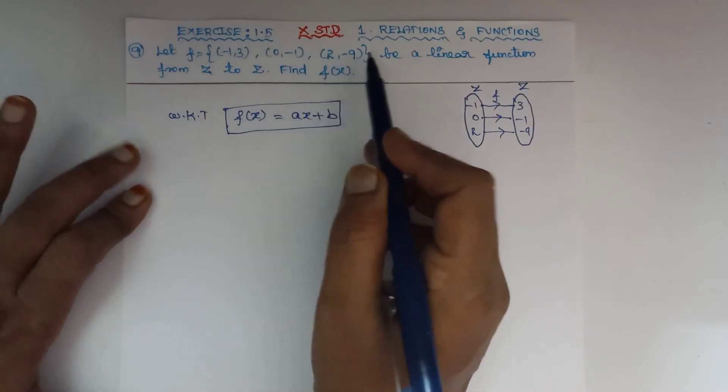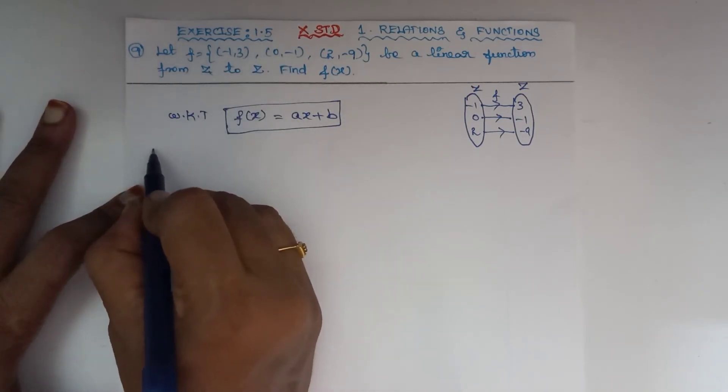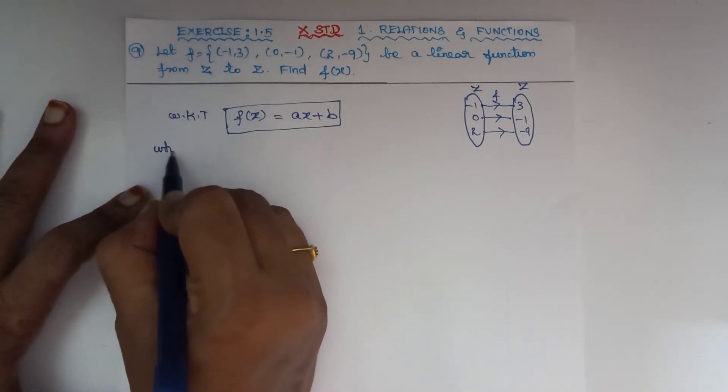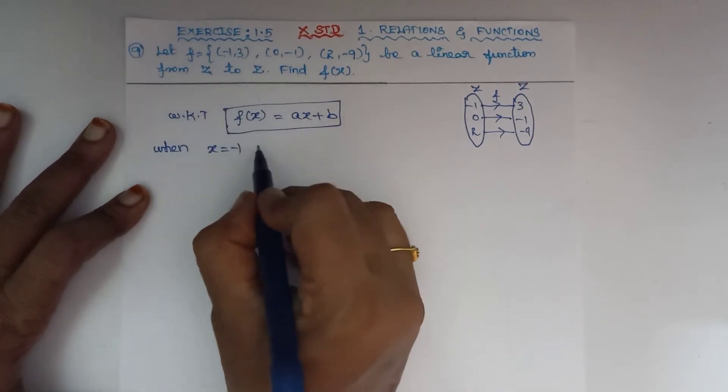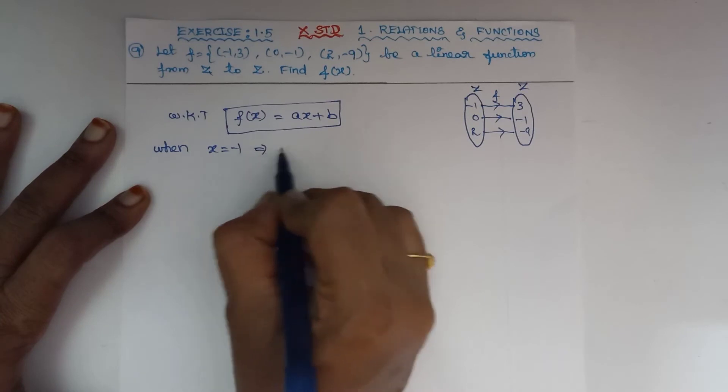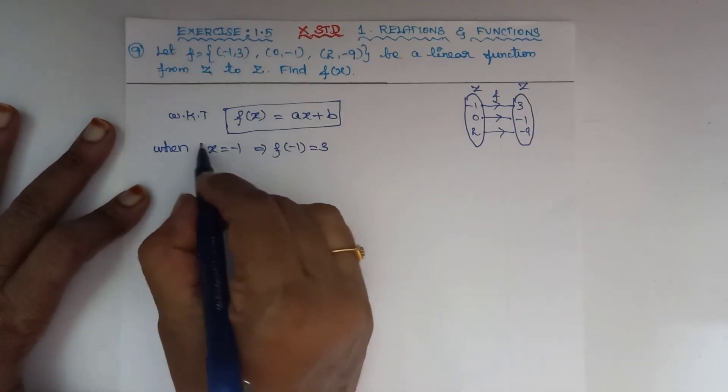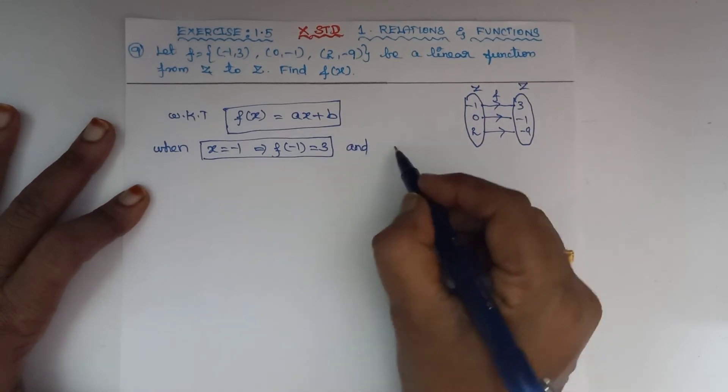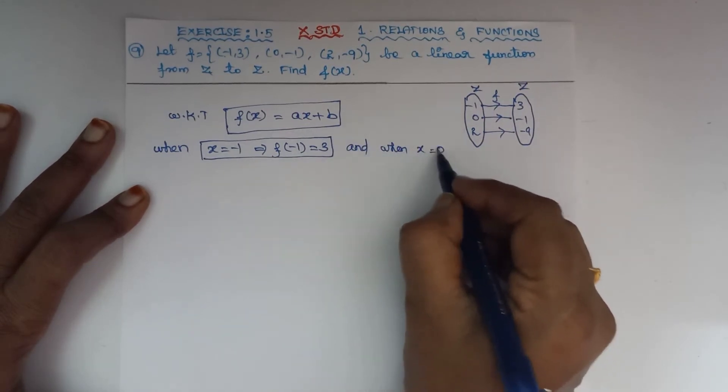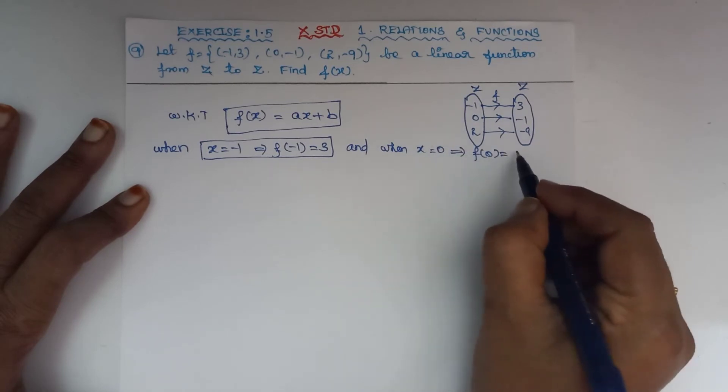First, we have two parameters to solve: when x = -1, x = -1 implies f(-1) = 3.